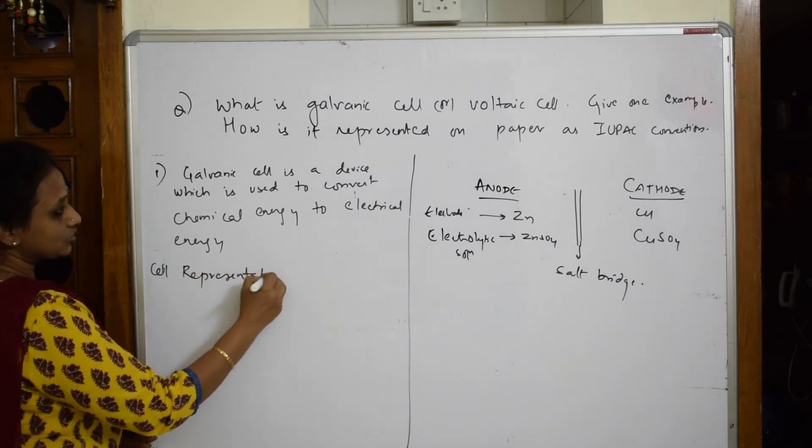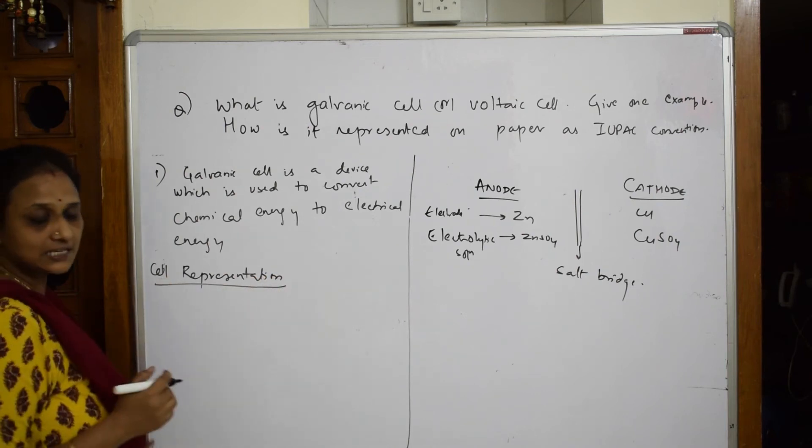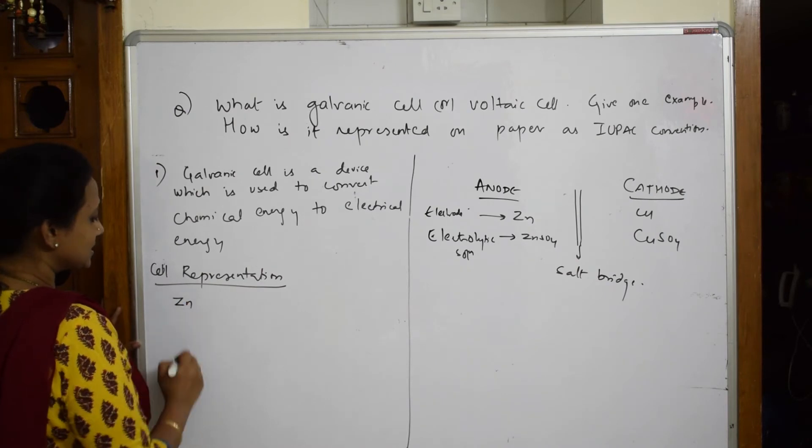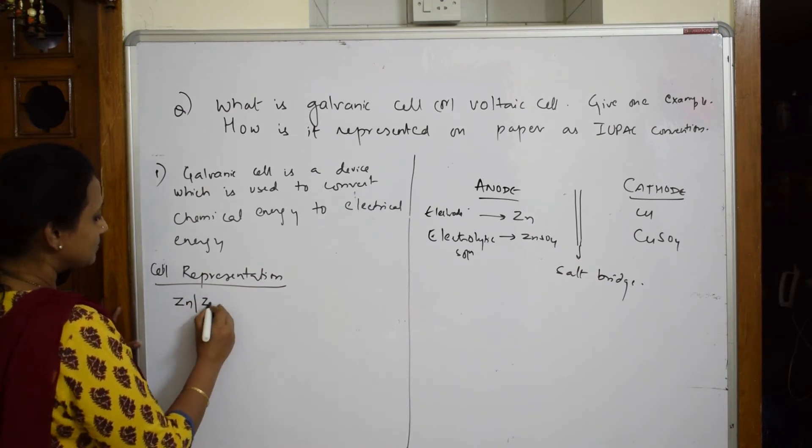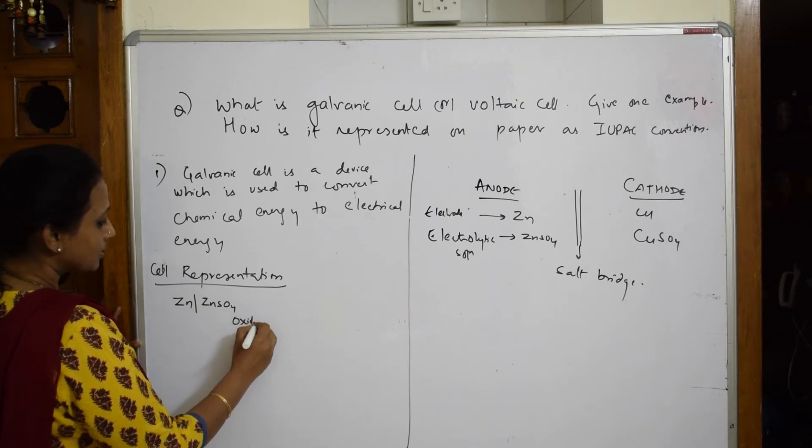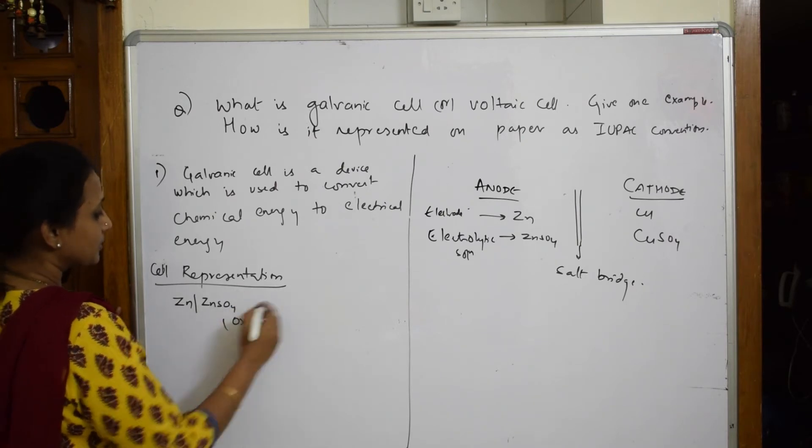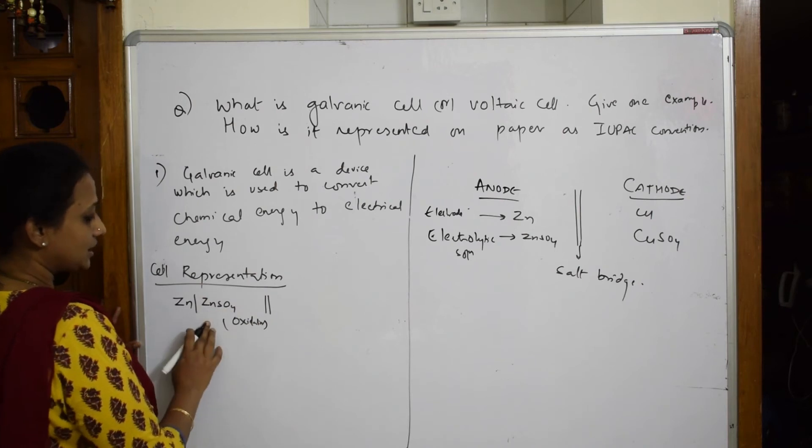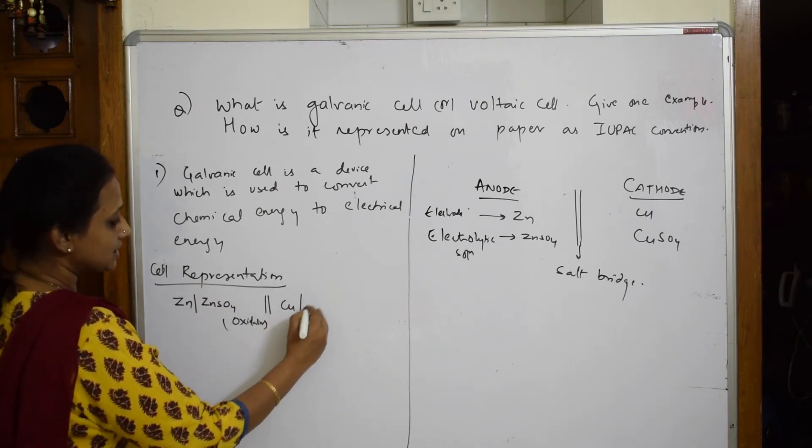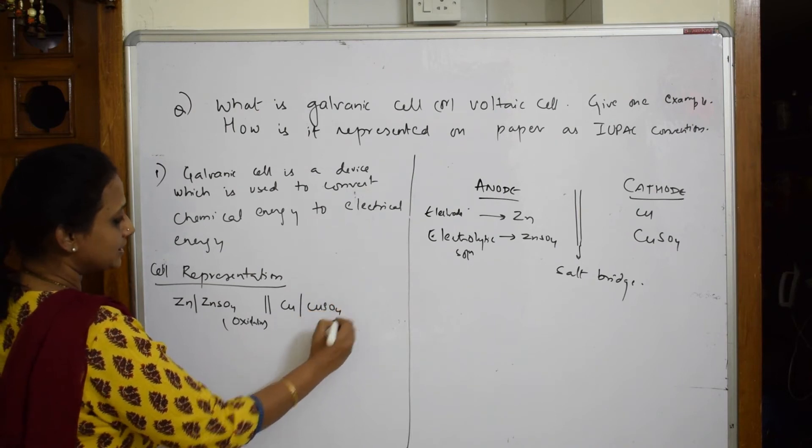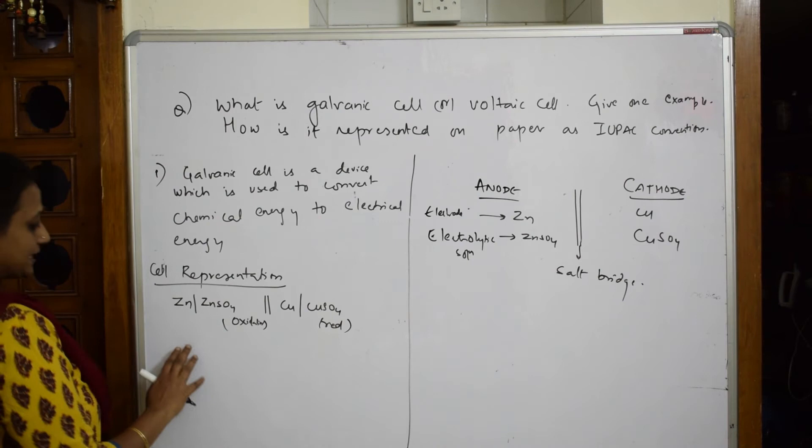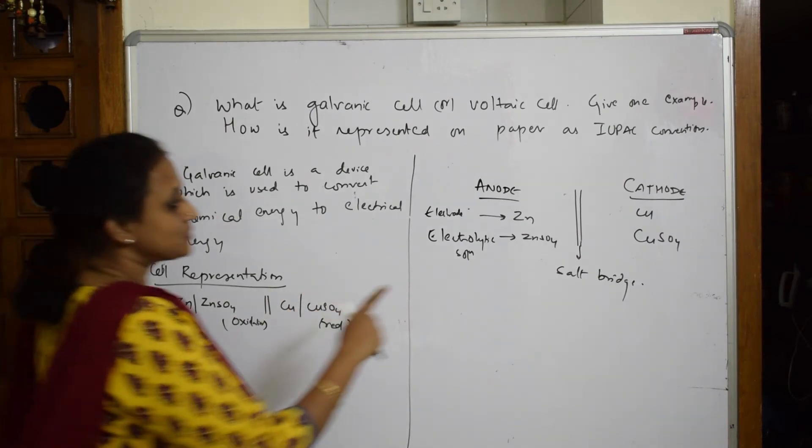Let's start. How to write? So if you're going to write cell representation in the exam, they ask you write the electrochemical cell representation, a cell representation symbol. So suppose if I take directly with electrolyte, see here I can write like this: zinc, put a single line, put zinc sulfate oxidation, oxidized, salt bridge. Now what should you write? You have to write copper. Start with copper, single line, copper sulfate reduction. This is one way of writing.